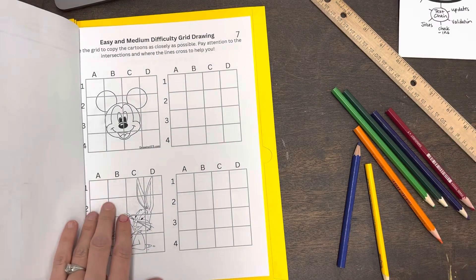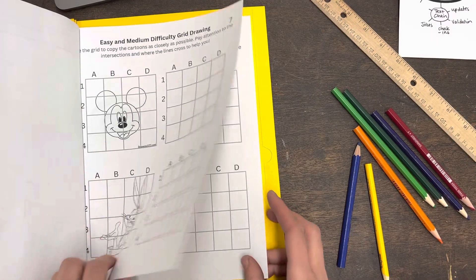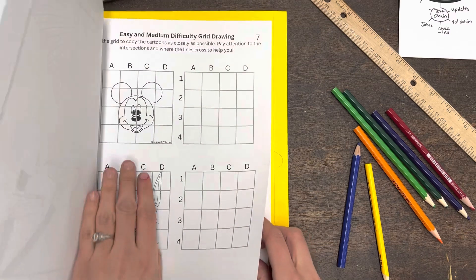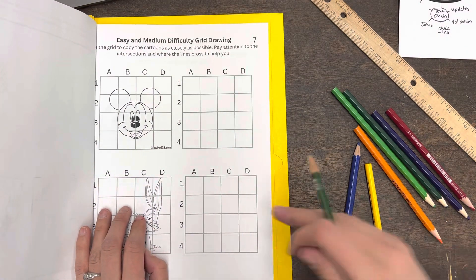So number seven and eight are grid drawing exercises. Some of you might be familiar with this and some of you may not, or might not have done this for quite some time.